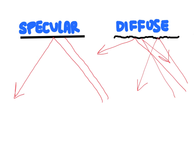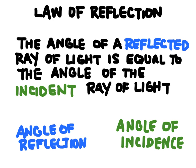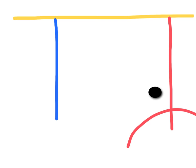Specular reflection says that as parallel rays come into a mirror, they're going to bounce off parallel to each other because we have that nice flat surface. This brings us to the law of reflection, which states that the angle of a reflected ray of light is equal to the angle of an incident ray of light. The reflected ray is the outgoing light and the incident ray is the incoming light. The angle of reflection is equal to the angle of incidence.